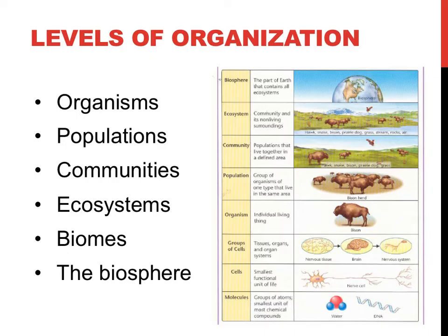It is important to learn about all of these levels of organization. By understanding how things work on a very basic level, you can gain a better understanding of how things work in a more complex system. Knowing how bison interact as a population, using the picture to the right as an example, you might begin to understand why or how they interact with different species the way that they do in a community.